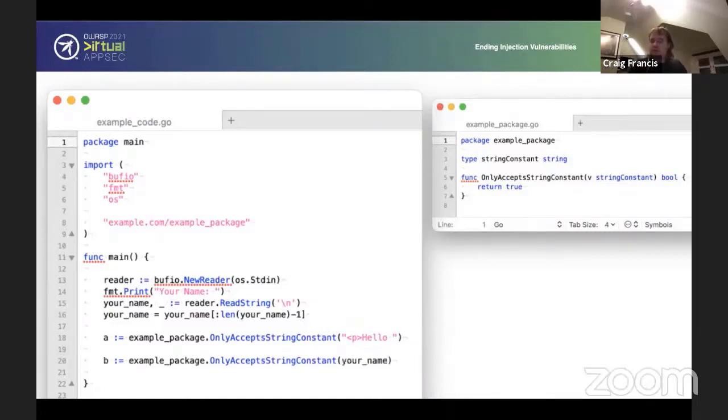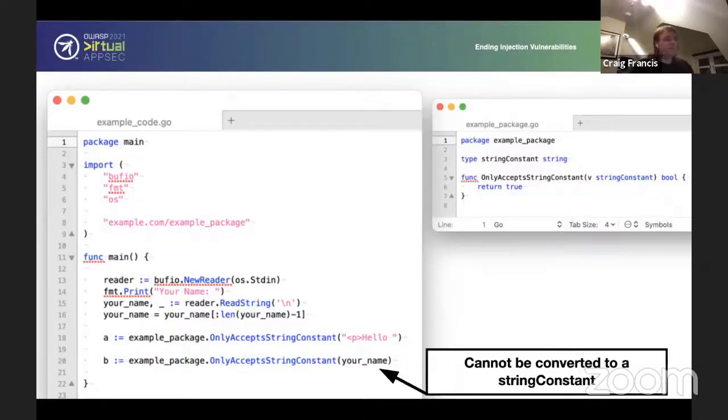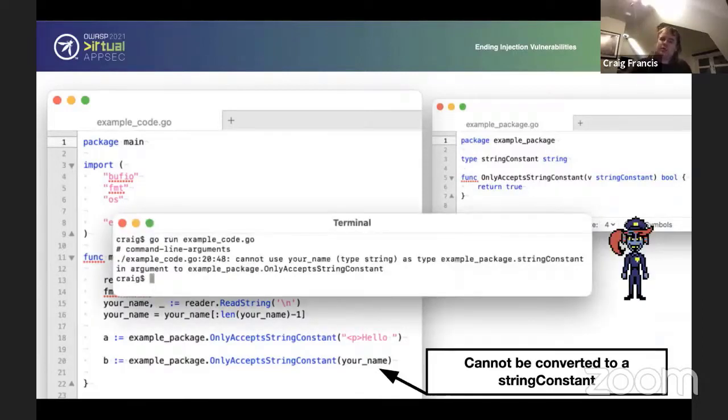When you come to the next one, which is the developer doing something wrong, this time, they're just passing in the your name variable, which contains untrusted data. It cannot be converted to a string constant at compile time. So when you're compiling it, the compiler rejects it. It says, cannot use your name, because it's just a type string. And that's it, you can't compile the code, that's it, you're done. So now the developer has to fix their code before they can continue. And they can't make any mistakes.